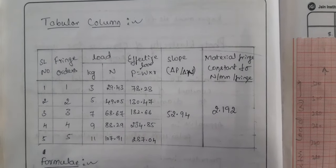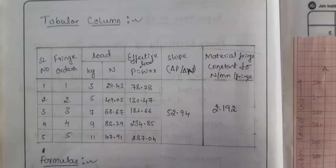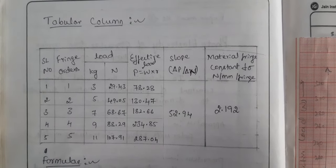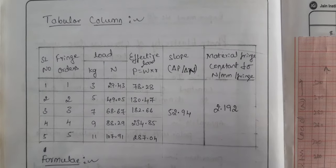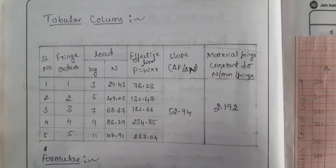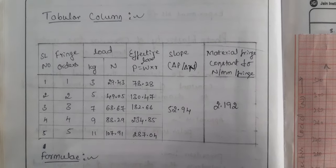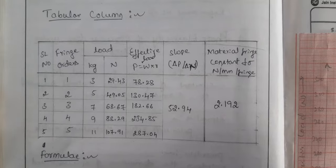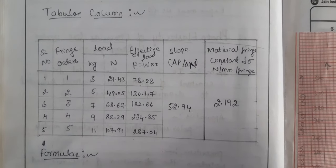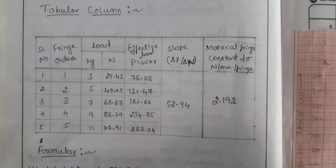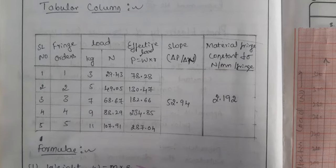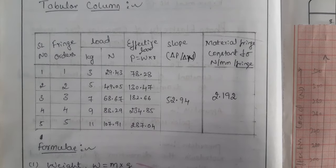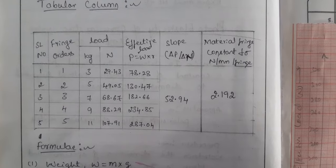This is the tabular column for the experiment. I will explain the complete procedure. The tabular column includes the fringe order and the load applied in kilograms, which you then convert into newtons. You then calculate the effective load p, which equals the net load multiplied by the ratio r. The slope delta p divided by delta n is obtained from the graph.